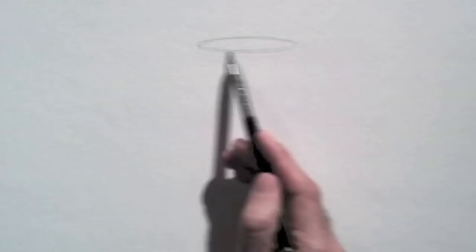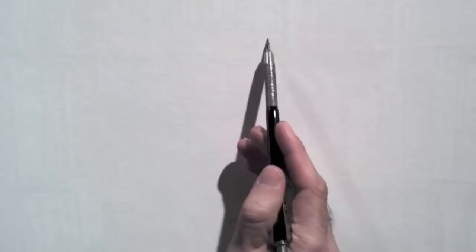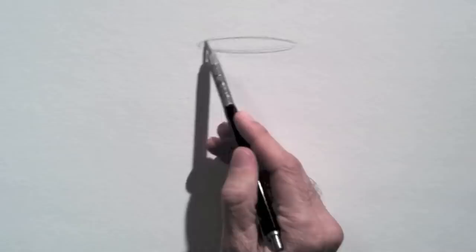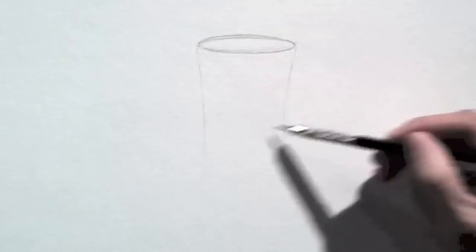Okay, now because a lot of you requested it, I'm going to draw a glass with water. First I sketch an oval for the top of the glass. And then the sides.